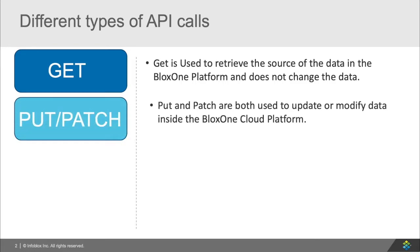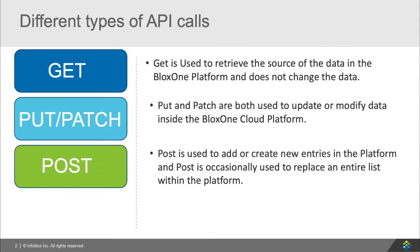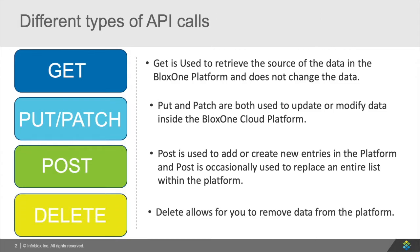The PUT and PATCH calls are used the same way in the platform. However, they're used in different calls and you will need to check the documentation on which one is available for the call you want to make. The PUT and PATCH calls are used to update and modify the data on the cloud platform; they do not completely add a new entry. POST is the REST API call that allows you to add a new entry into the cloud platform. Finally, DELETE allows you to remove the data from the platform, allowing you to delete mistakes or delete information that is no longer needed or wanted.